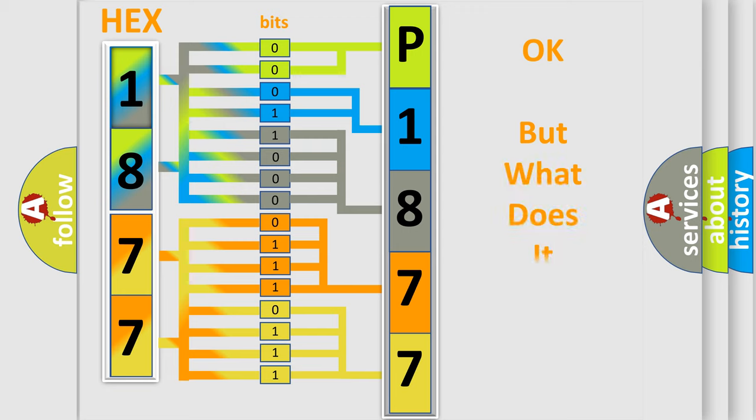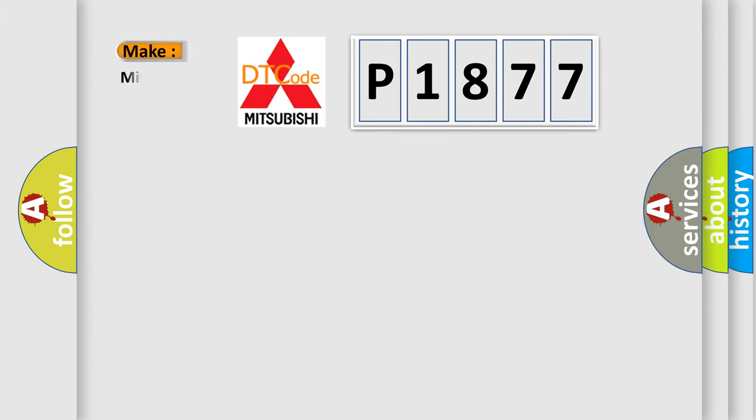We now know in what way the diagnostic tool translates the received information into a more comprehensible format. The number itself does not make sense to us if we cannot assign information about what it actually expresses. So, what does the diagnostic trouble code P1877 interpret specifically for Mitsubishi car manufacturers?